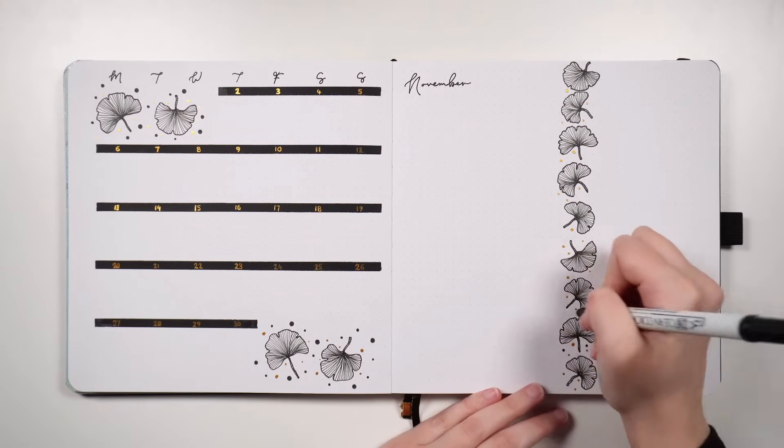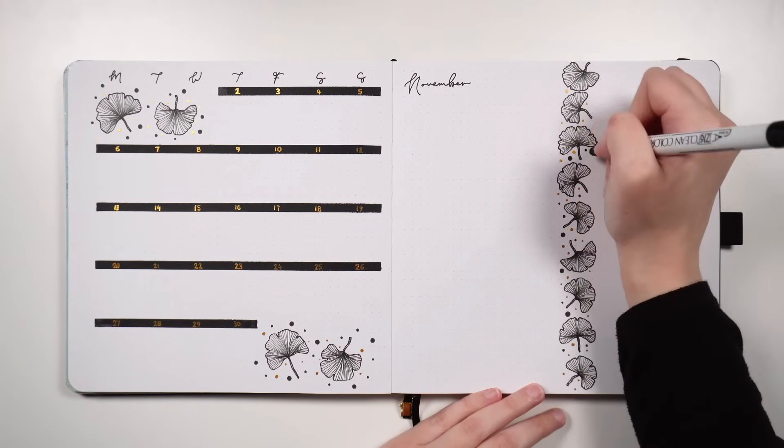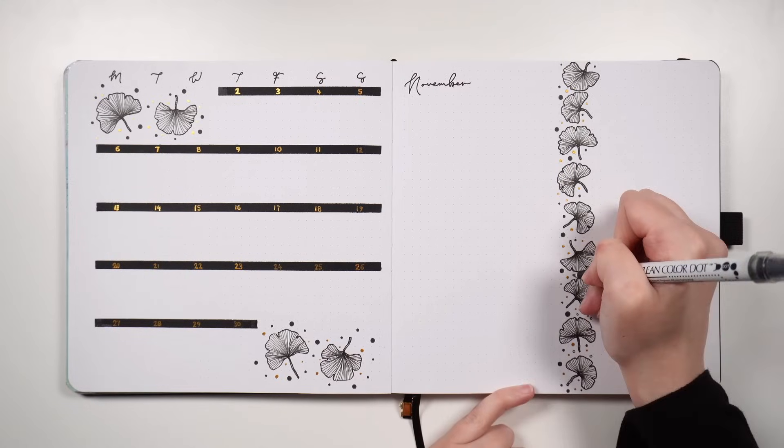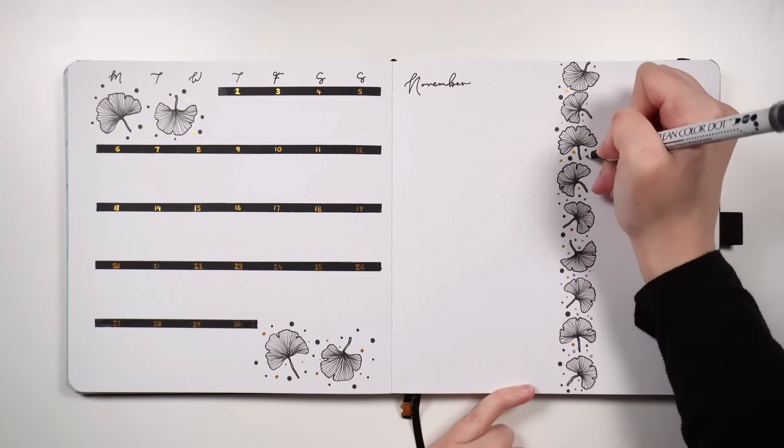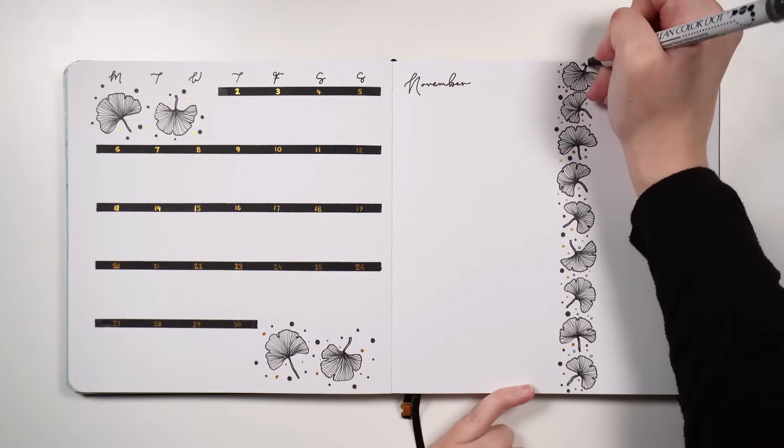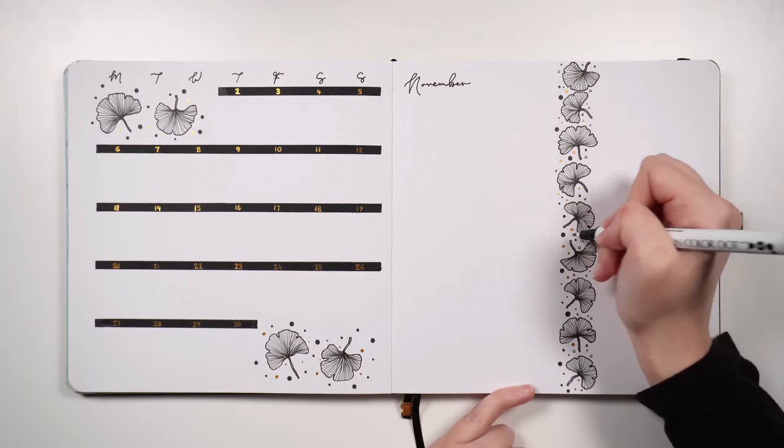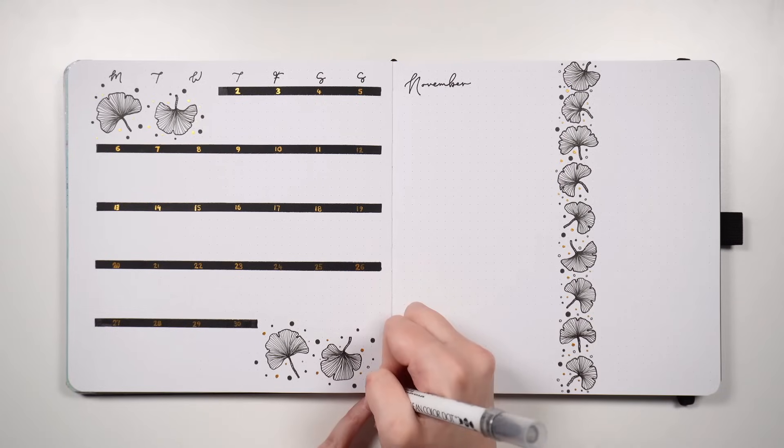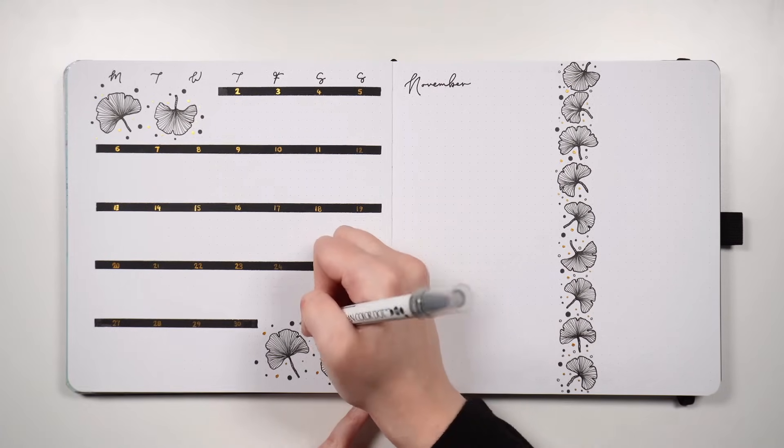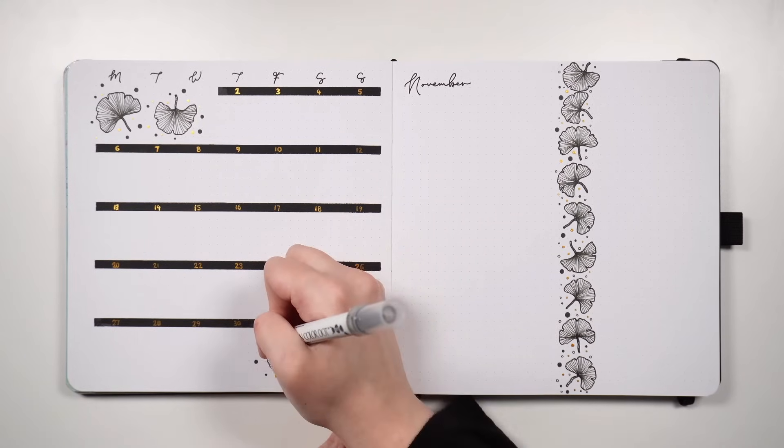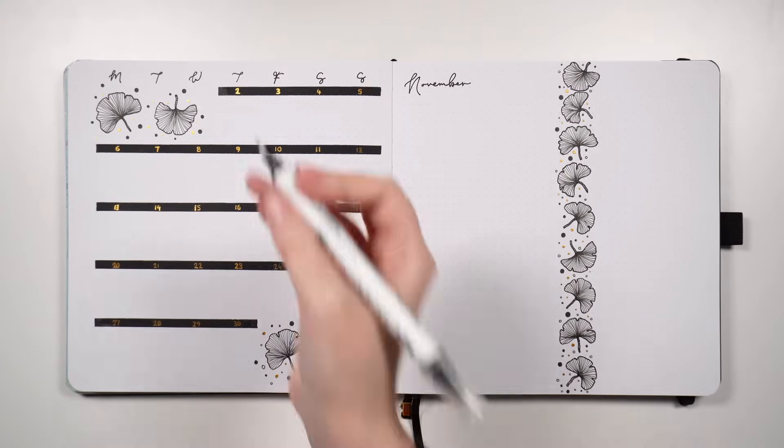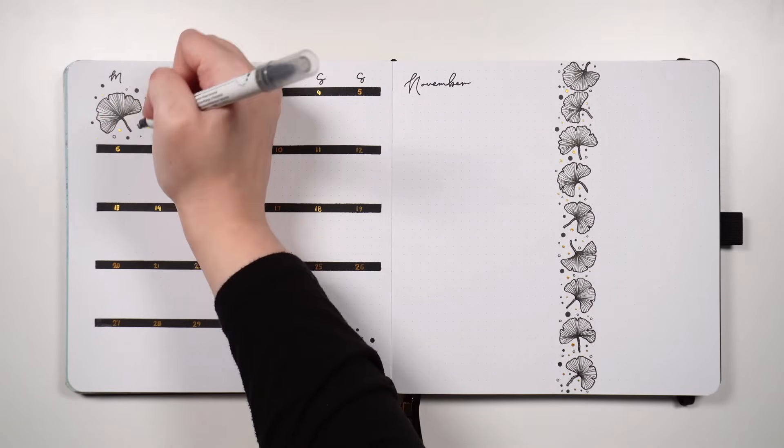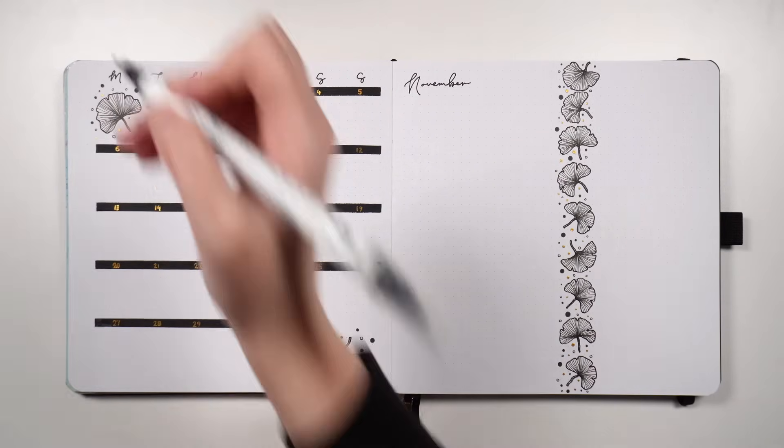I love having an easy space filler in my layouts, so for this one I'm using dots to fill in any of the extra space around the ginkgo leaves. These are just a combination of full black dots and open circles that I'm doing with my Zig Clean Coloured Dot Markers, and then the gold dots from the gold paint. I find this just helps to make things look a little bit balanced, especially where I've got some ginkgo leaves, which are a little bit closer together compared to other ones. And it's also a really super easy decoration style that I can use on my daily and weekly logs when it comes to subsequent pages.